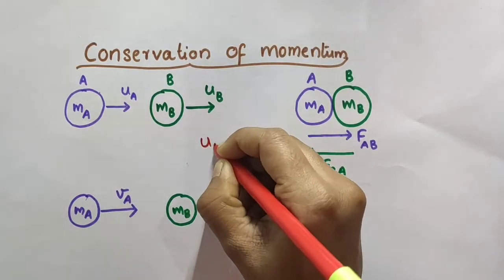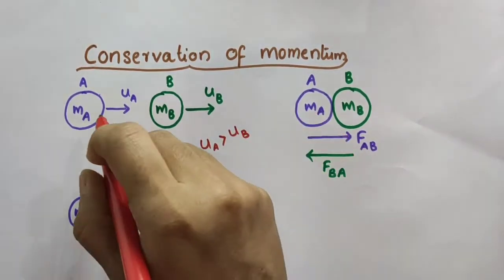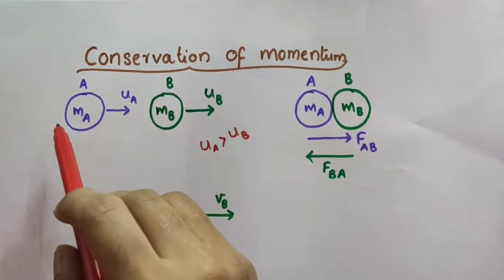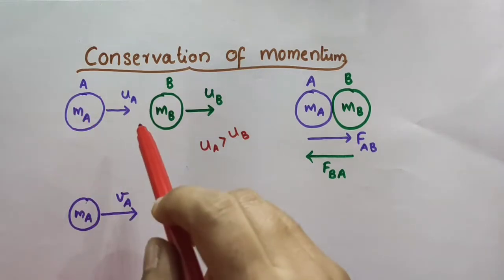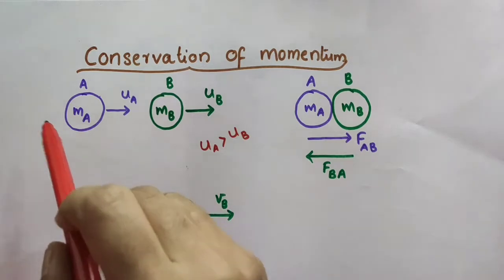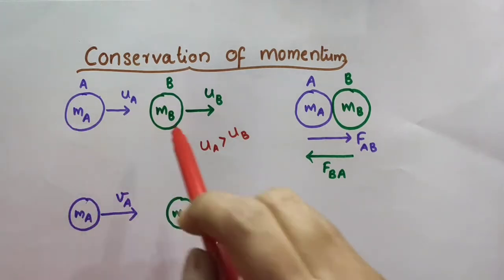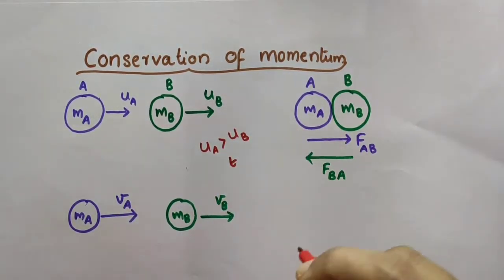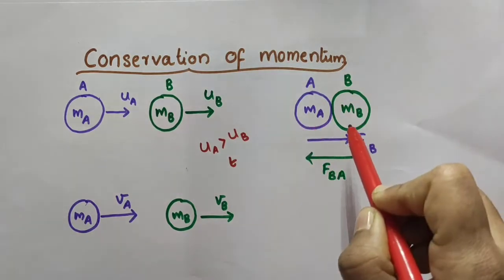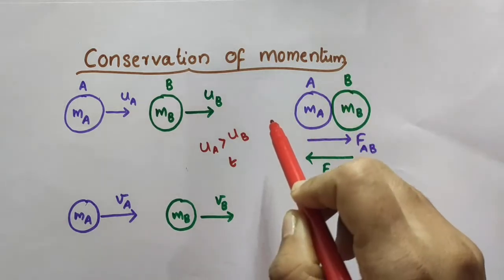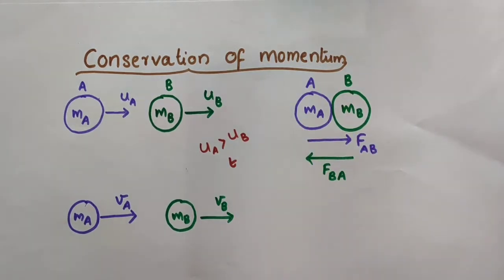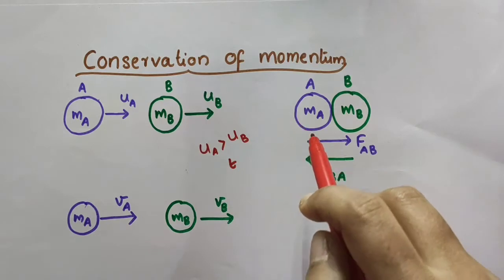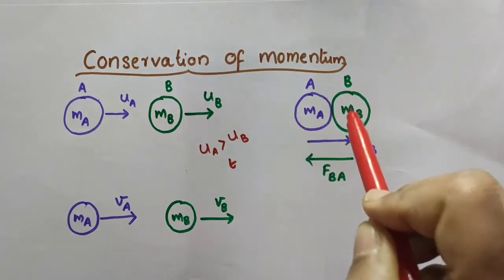Now let UA be greater than UB — that is, ball A moves faster than ball B. So after some time they collide with each other. Let the collision last for a time T. During the collision, ball A exerts a force on B and ball B exerts a force on A, as per Newton's third law of motion — for every action there is an equal and opposite reaction.